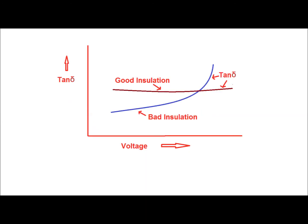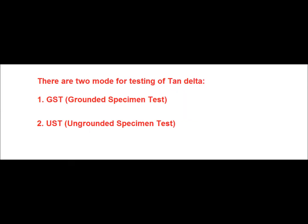In this diagram, an example has been shown for good and bad insulation. In the case of good insulation, when the applied voltage increases, the tan delta values of the insulation remain more or less the same. But in the case of bad insulation, with the increase of applied voltage, the tan delta value increases. Basically there are two modes for testing of tan delta: GST, that is grounded specimen test, and UST, that is ungrounded specimen test.